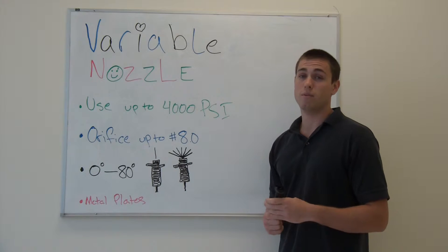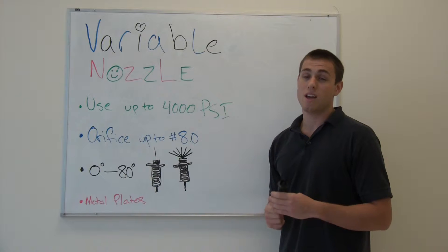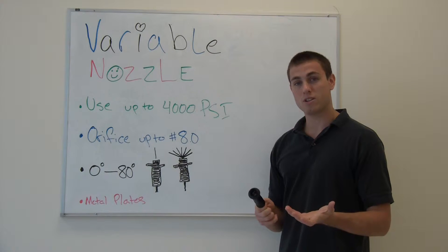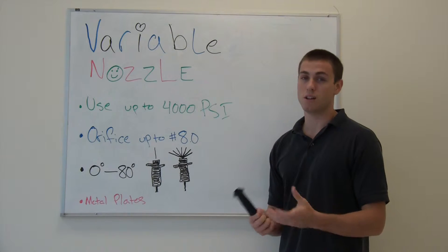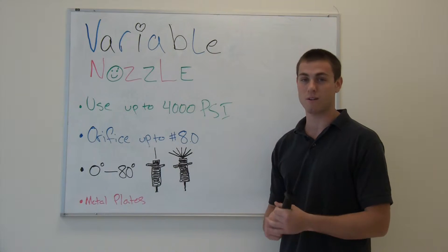They also range from a number 2 orifice up to number 8 orifice. If you have a lot more pressure and flow going through your machine, you get a larger orifice because that'll be determined by your pressure and flow. You can calculate that on our website.